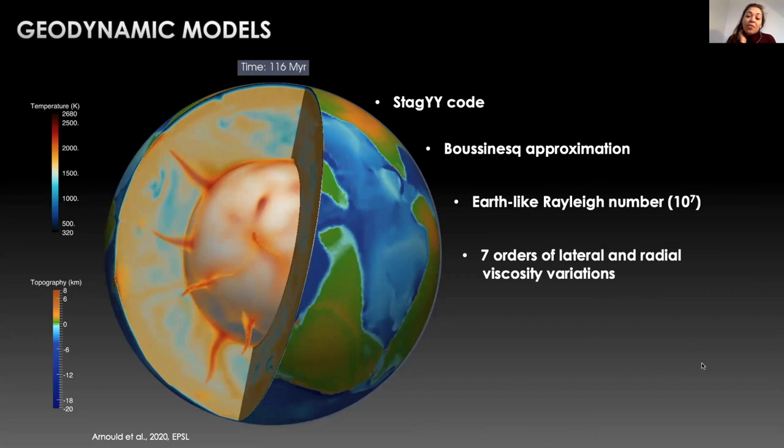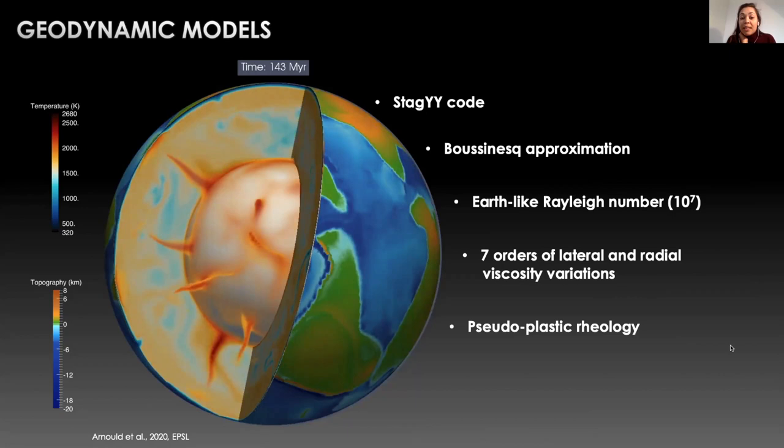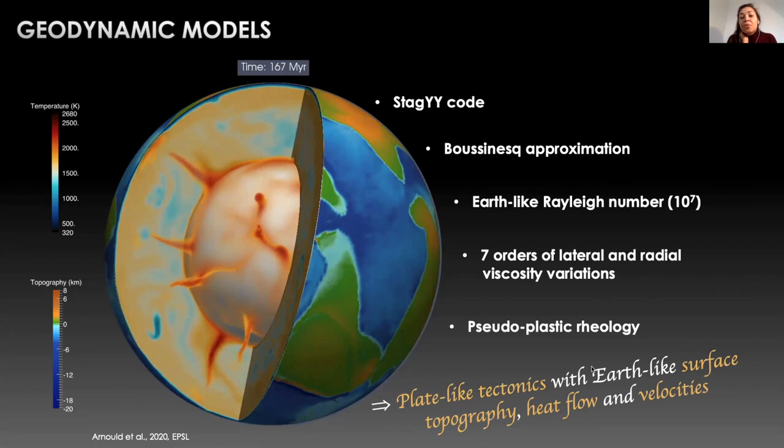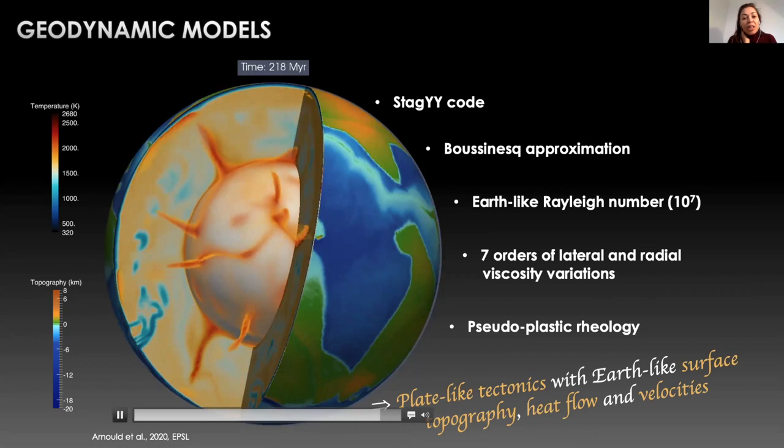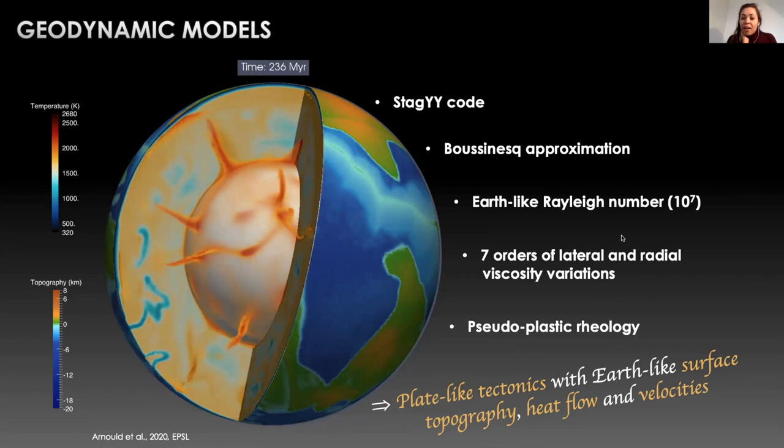And a pseudo-plastic rheology to allow the localization of surface deformation. These ingredients produce models with plate-like tectonics with earth-like surface topography, heat flow, and plate velocity as shown here on this movie where you can see for example a ridge.